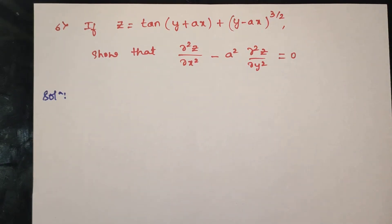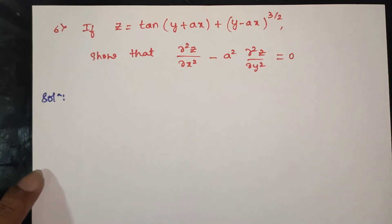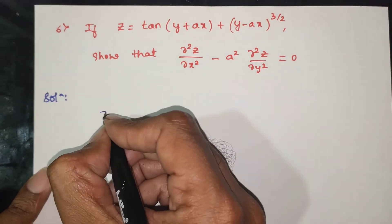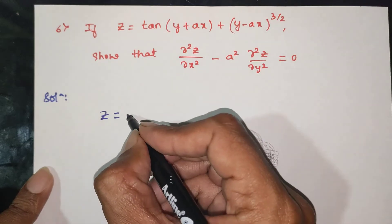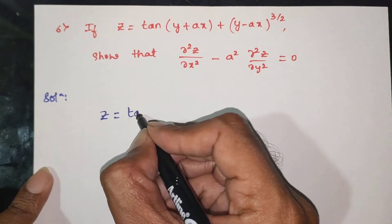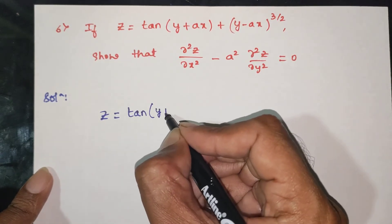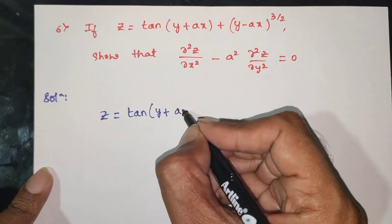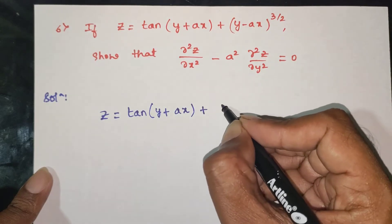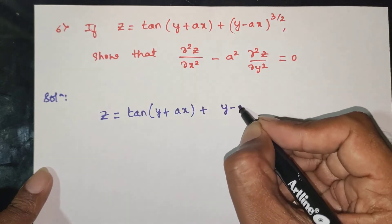If z is equal to tan(y + ax) + (y - ax)^(3/2), show that ∂²z/∂x² minus a² times ∂²z/∂y² is equal to 0. We need to find ∂²z/∂x² and ∂²z/∂y² separately.